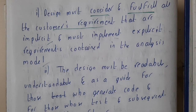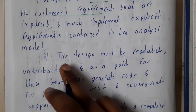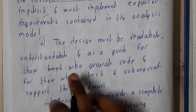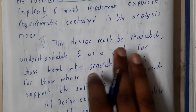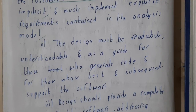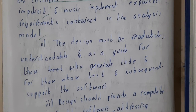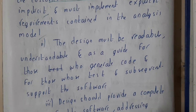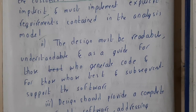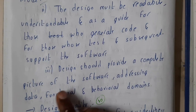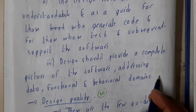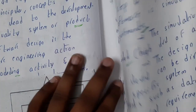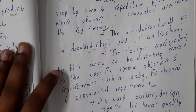The design must have everything that the customer wants. Second, the design must be readable and understandable, and serve as a guide for those who generate code - like a step-by-step guide saying do this, then do that. Third, the design should provide a complete picture of the software, addressing the data, function, and behavior domains.